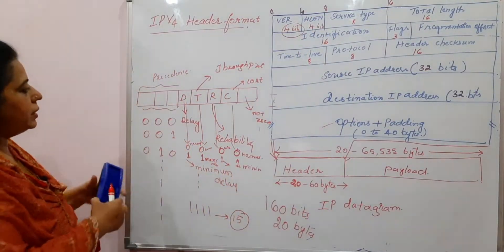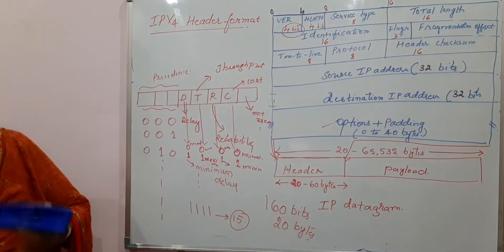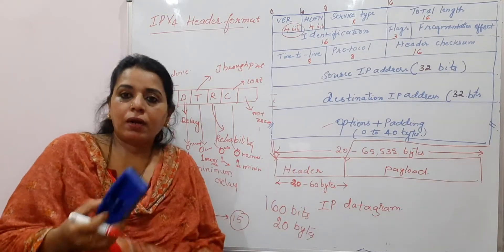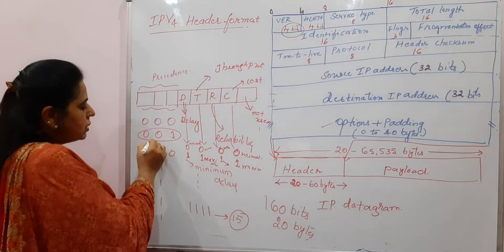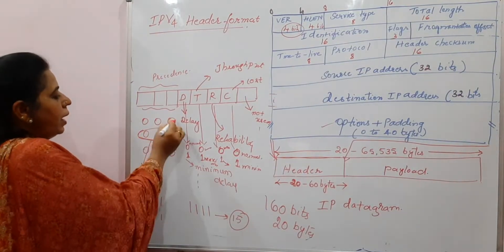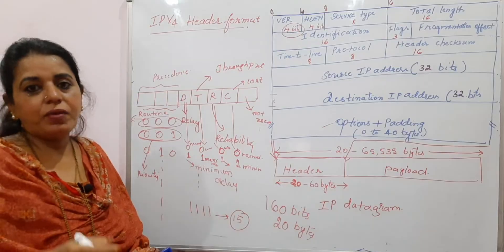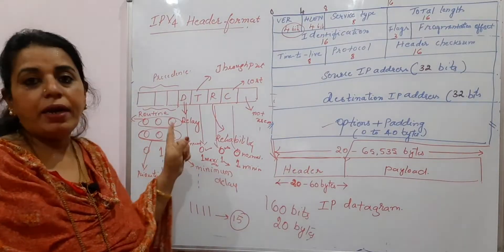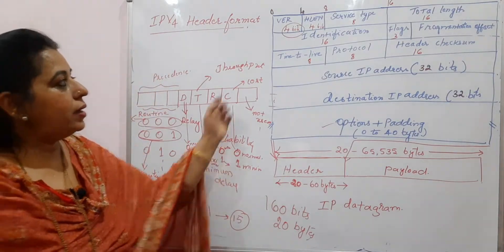You also have the precedence field, which represents priority. If the precedence value is 001, it indicates a priority packet — the router has to process and forward it ahead of others. If the value is 000, it is a routine packet and the router processes it whenever the packet's turn comes in the queue. This is all related to the service type field.